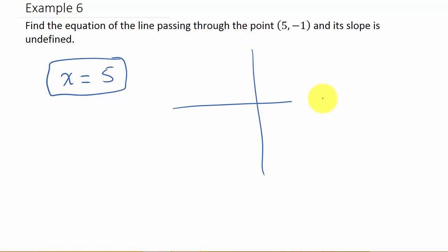Look at this. If we plot the point (5, -1), we know it's a vertical line if it's an undefined slope. There's the line right there, and that's your equation, x equals 5.